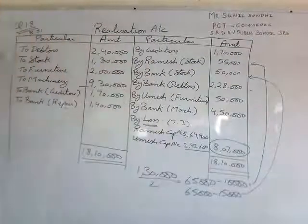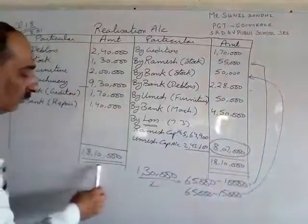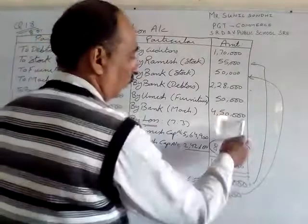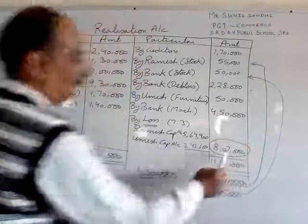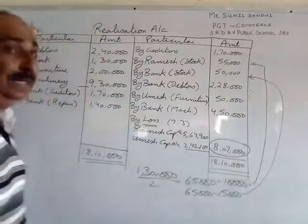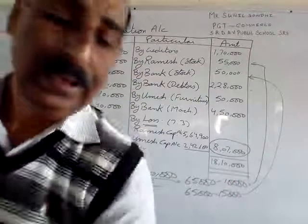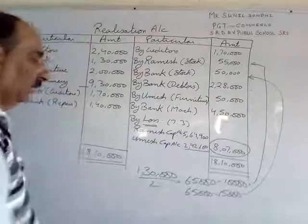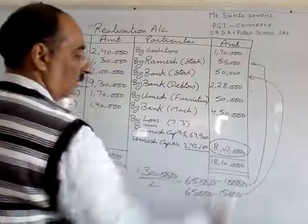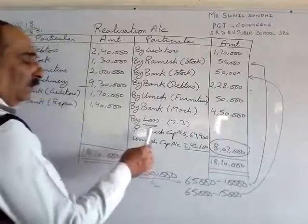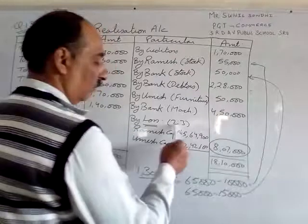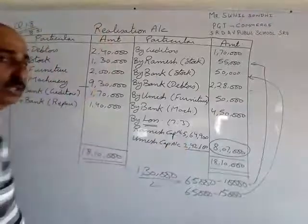Balance karne ke liye total aata hai 18,10,000 ka loss hai. Isi wajah se firm jo hai dissolve ho rahi hai. Ise likhenge 'by loss' 8,07,000. Aur isko hum partners mein distribute kar denge unke ratio mein — ratio question mein thi 7:3 (capital ratio) — 7:3 mein distribute kar denge.